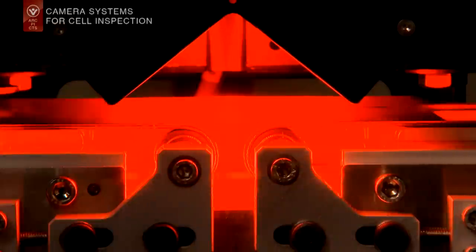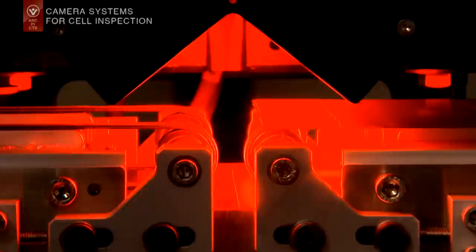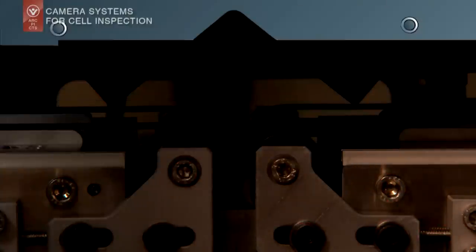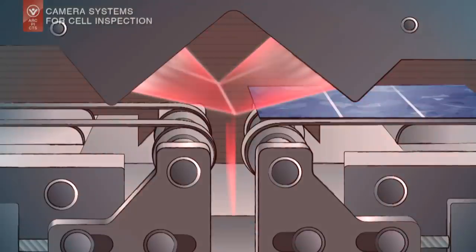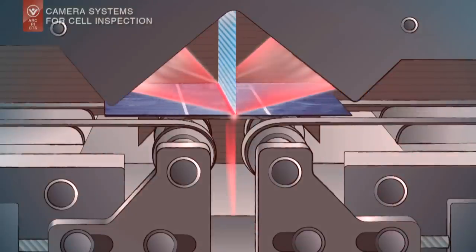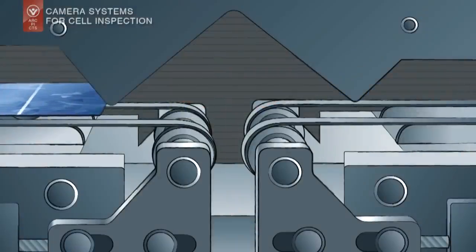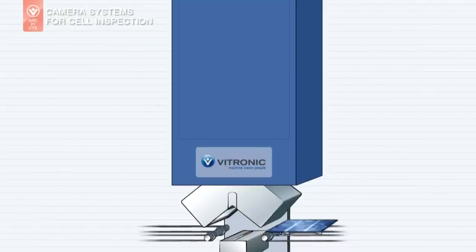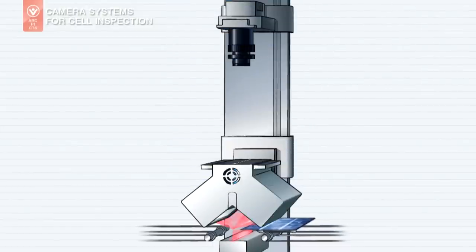A shuttle takes the cell from the conveyor belt. The right illumination is essential for the image to be assessed. Two LED panels illuminate the surface. Another LED panel installed under the shuttle ensures that the edges are captured precisely.